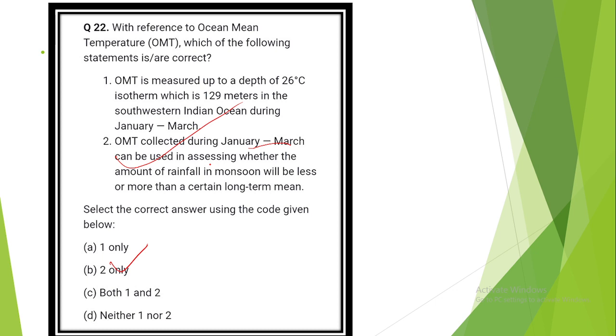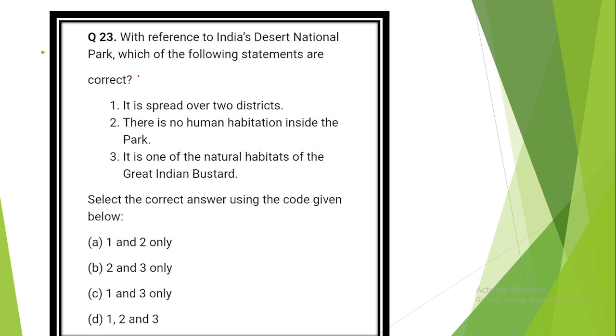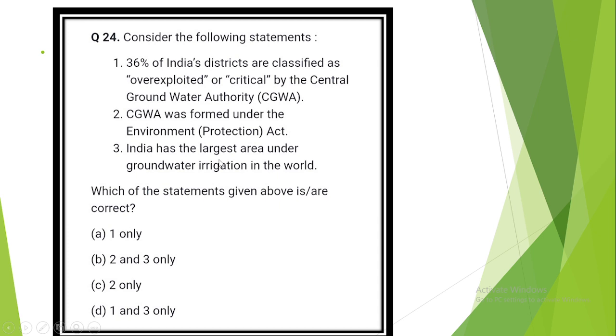Question number 23. With reference to India's Desert National Park, which of the following statements is or are correct? The answer is option C: 1 and 3. Spread over two districts. It is one of the natural habitats of Great Indian Bustard. Question number 24. Consider the following statements. The answer is Option B: 2 and 3. Central groundwater authority has formed under Environment Protection Act 1986. India has the largest area under groundwater irrigation in the world.